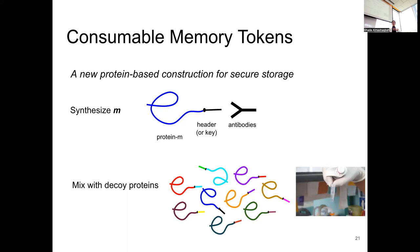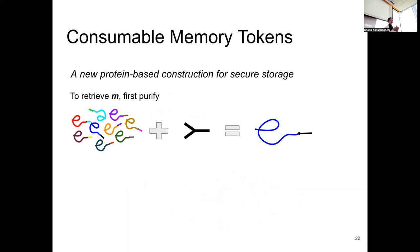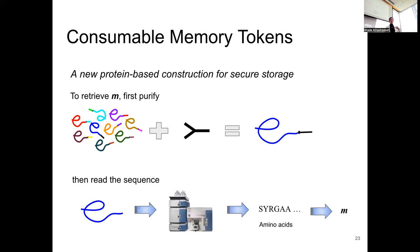To retrieve the message, you first have to purify the sample by applying the matching antibodies to the secret header, which will pull down the target protein. Once you have a pure protein sample, you cleave the header out of the target protein, feed it to the mass spec, and it will tell you the sequence of amino acids — then you decode it back to get the message. You cannot just deal with the random mix and sequence it to get the message back; there is a specific protocol.